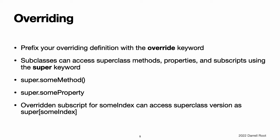Accessing superclass methods, properties, and subscripts. When you provide a method, property, or subscript override for a subclass, it is sometimes useful to use the existing superclass implementation as part of your override. For example, you can refine the behavior of that existing implementation or store a modified value in an existing inherited variable. Where appropriate, you can access the superclass version of a method, property, or subscript by using the super prefix. An overridden method named someMethod can call the superclass version of someMethod by calling super.someMethod within the overriding method implementation. An overridden property called someProperty can access the superclass version of someProperty as super.someProperty within the overriding getter or setter implementation. An overridden subscript for someIndex can access the superclass version of the same subscript as super[someIndex] from within the overriding subscript implementation.